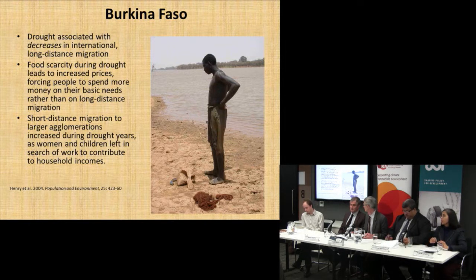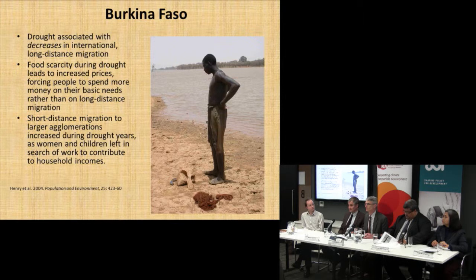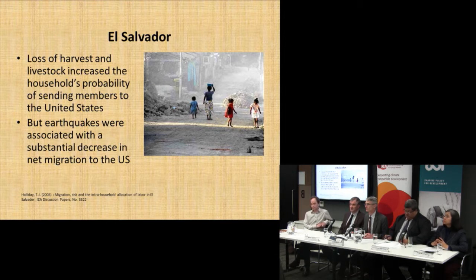To give examples of how people respond to climate stresses: in Burkina Faso, a seminal study by Sabine Henry et al. surveyed 8,000 households and found that during drought, short-distance migration increased but long-distance migration decreased, because people didn't have the resources to migrate further. In El Salvador, a paper by Halliday found that loss of harvest caused international migration to go up — the reverse of Burkina Faso.